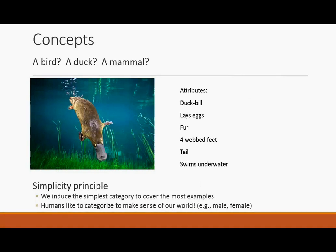What about the platypus? Is it a bird, a duck, a mammal? It has attributes: a duck bill, it lays eggs, it has fur, four webbed feet, a tail, and it swims underwater. What is it? It's a mammal. But it does not fit — it does not assimilate. It must be accommodated into our concept of what a mammal is. It does not fit the prototypical idea of a mammal.